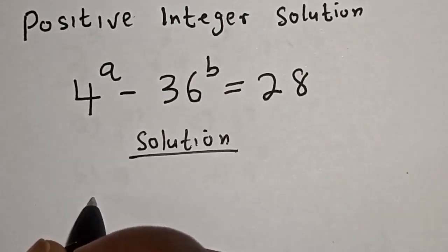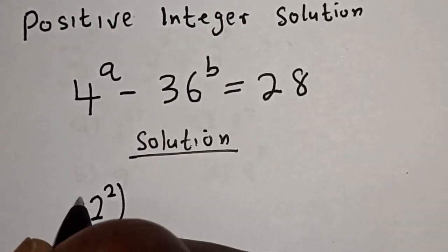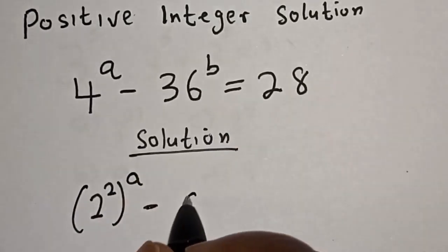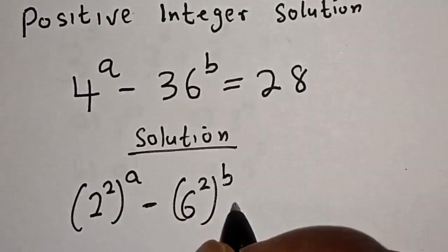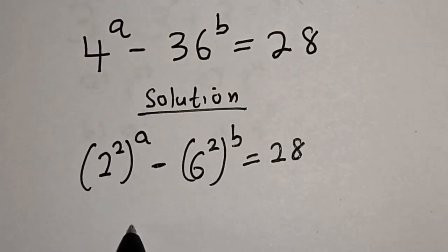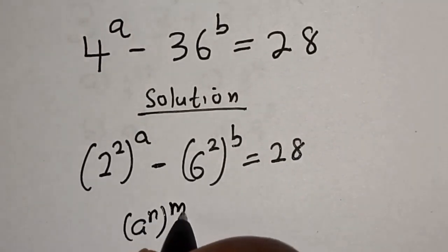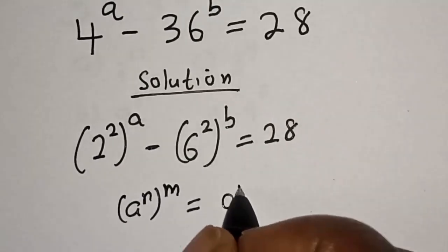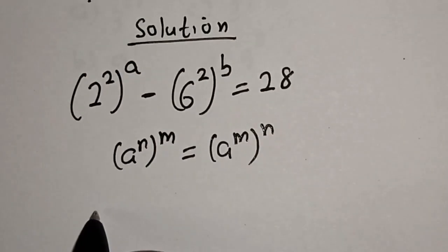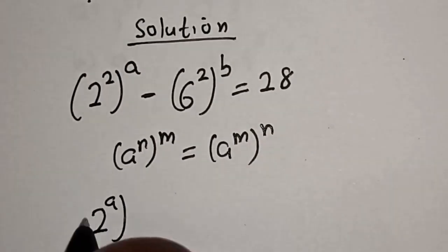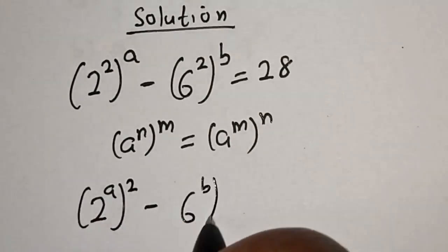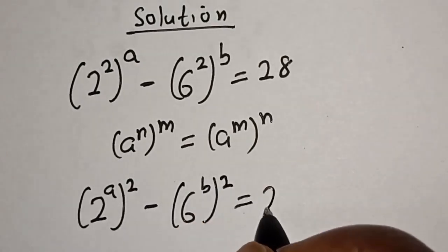4 to the power of a can be written as 2 squared, all raised to the power of a. Minus 36 to the power of b can be written as 6 squared, all raised to the power of b, is equal to 28. Applying the power rule, this becomes 2 raised to the power of 2a minus 6 raised to the power of 2b is equal to 28.